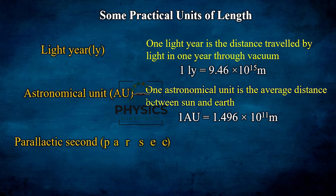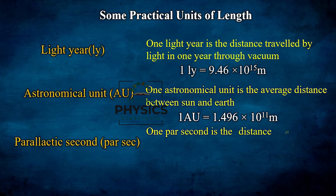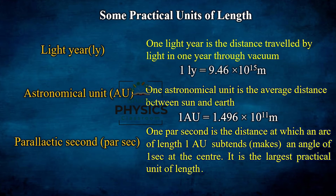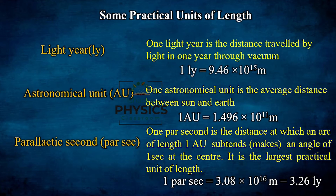The next practical unit of length is the parsec. One parsec is the distance at which an arc of length one AU subtends an angle of one arc-second at the center. It is the largest practical unit of length. One parsec is equal to 3.08 × 10¹⁶ meters, or equivalently 3.26 light years.